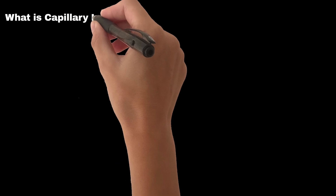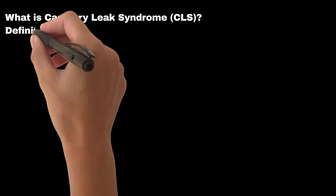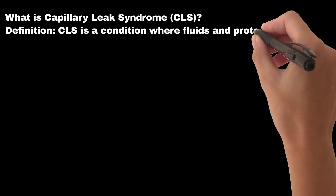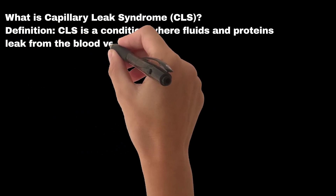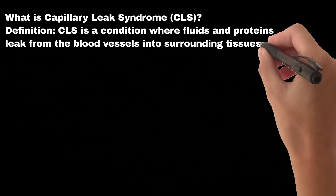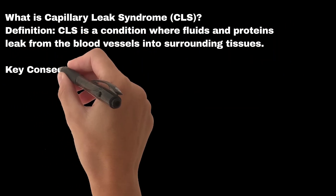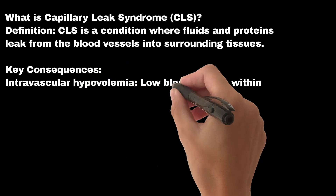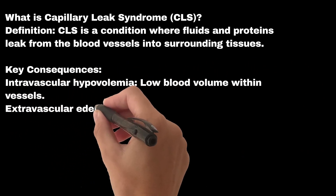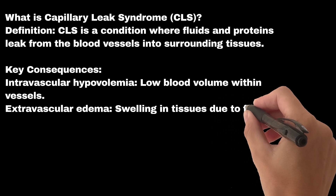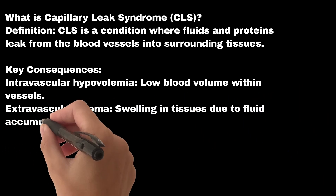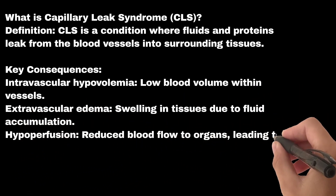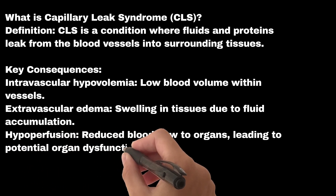What is Capillary Leak Syndrome? CLS is a condition where fluids and proteins leak from the blood vessels into surrounding tissues. Key consequences include intravascular hypovolemia — low blood volume within vessels — extravascular edema, which is swelling in tissues due to fluid accumulation, and hypoperfusion, meaning reduced blood flow to organs, leading to potential organ dysfunction.